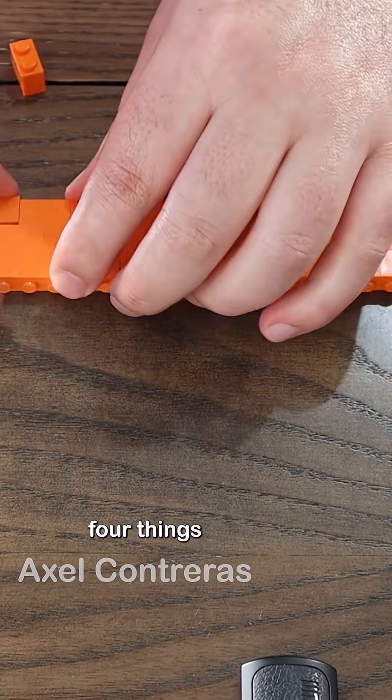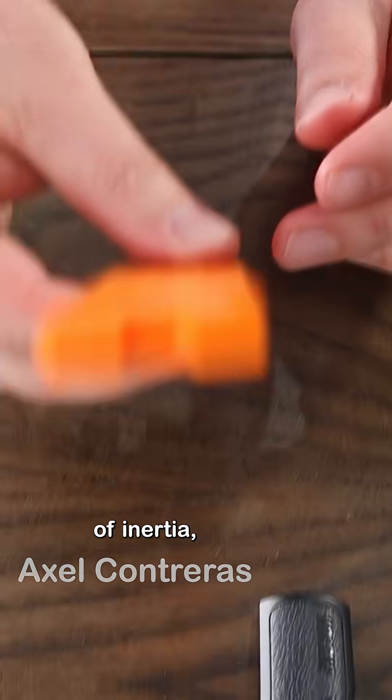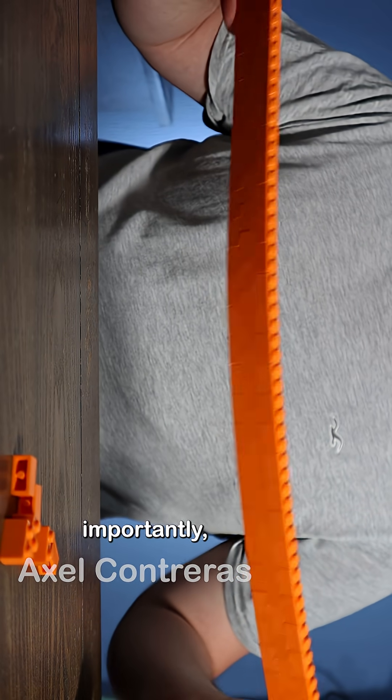How easily it bends depends on four things: the applied force, the material of the pieces, the moment of inertia, which relates to the shape, and most importantly, the length.